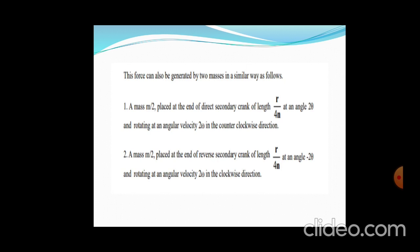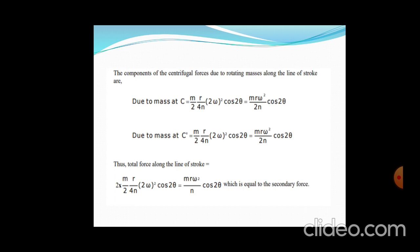The forces generated by the two masses are similar. For secondary forces, mass M/2 is placed at radius R/4N with angle 2θ and angular velocity 2ω. In the reverse direction, mass M/2 is also at R/4N with angle 2θ rotating at 2ω in the clockwise direction. The component of centrifugal forces along the stroke is: M/2 × R/(4N) × (2ω)²cos2θ = MRω²/(2N) × cos2θ. The total, 2 × [M/2 × R/(4N) × (2ω)²cos2θ], equals the secondary force. These are the primary and secondary forces resolved from the centrifugal forces due to the rotating masses.